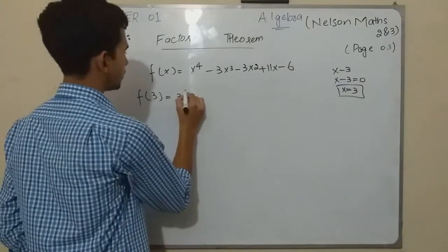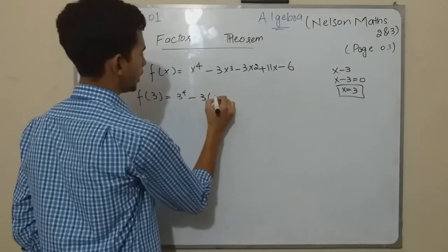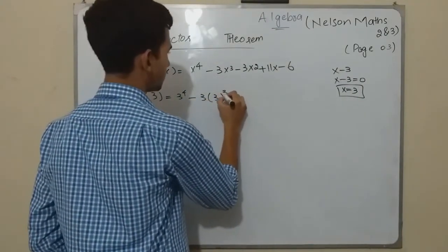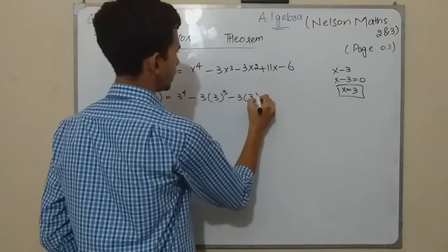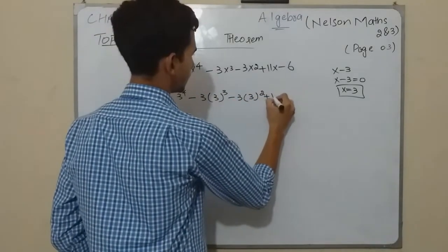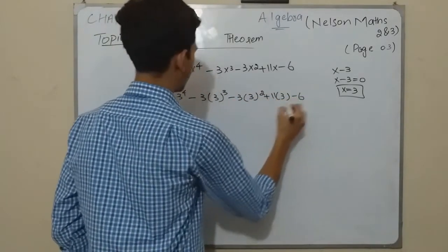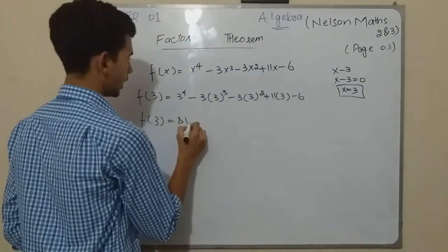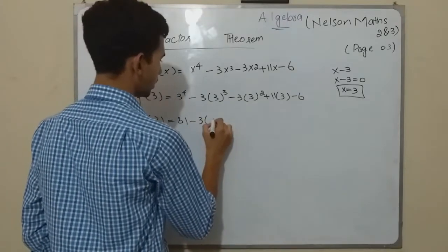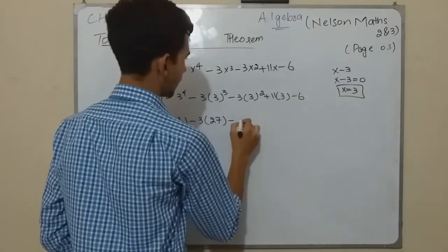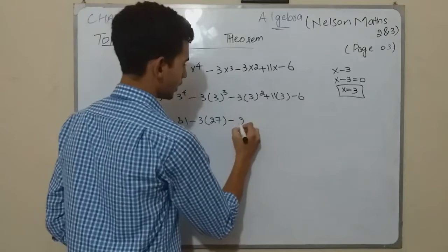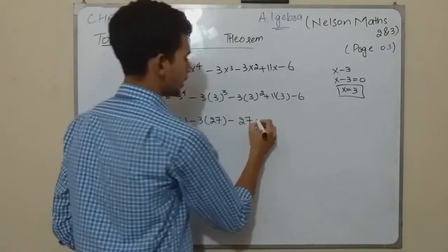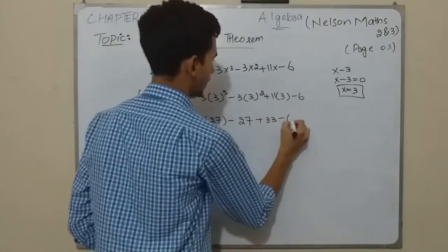So f(3) equals 3⁴ - 3 × 3³ - 3 × 3² + 11 × 3 - 6. So f(3) equals this is 81, this is 3 × 27, minus this is 9 and this again makes 27, plus 33 minus 6.